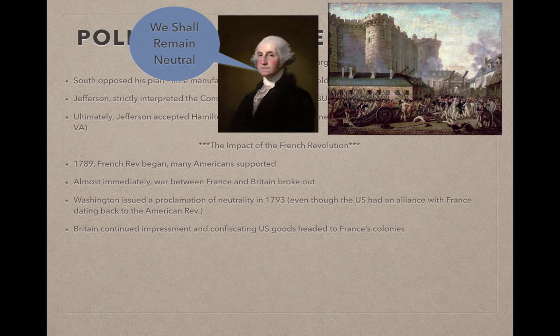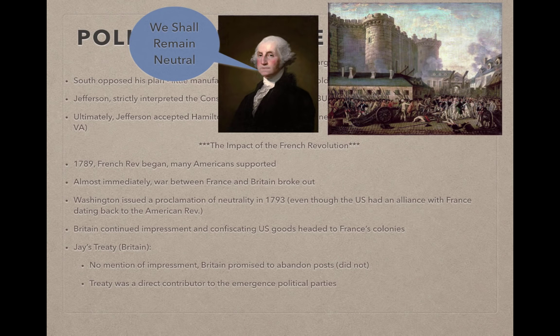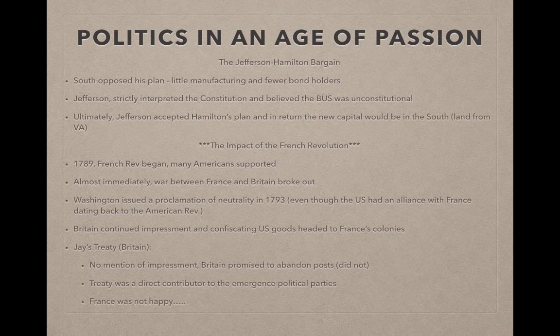France was upset by the Proclamation of Neutrality, as were Jefferson and his supporters. Britain continued impressing American sailors — kidnapping them and forcing them into the navy — and confiscated U.S. goods headed to France. Washington sent John Jay, the first Chief Justice, to Britain to negotiate a treaty. However, the resulting Jay's Treaty had no mention of impressment, and Britain only promised to abandon frontier forts — something they had promised at the end of the Revolutionary War and still hadn't done. Jay's Treaty contributed directly to the emergence of political parties, and France was not happy, nor was Jefferson.